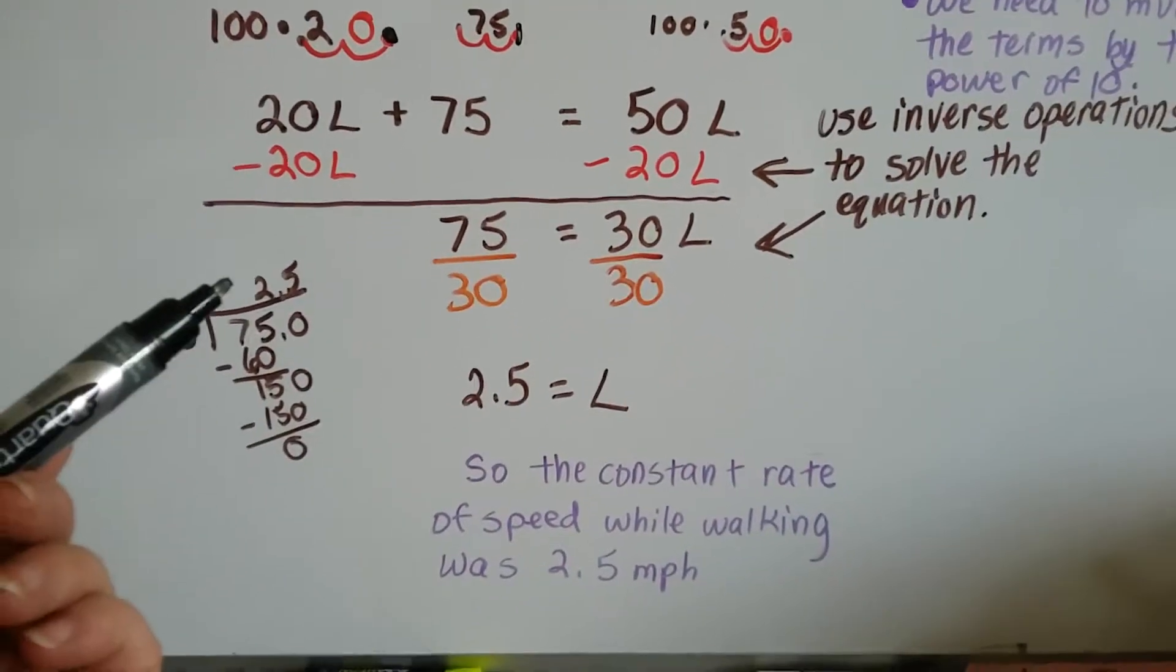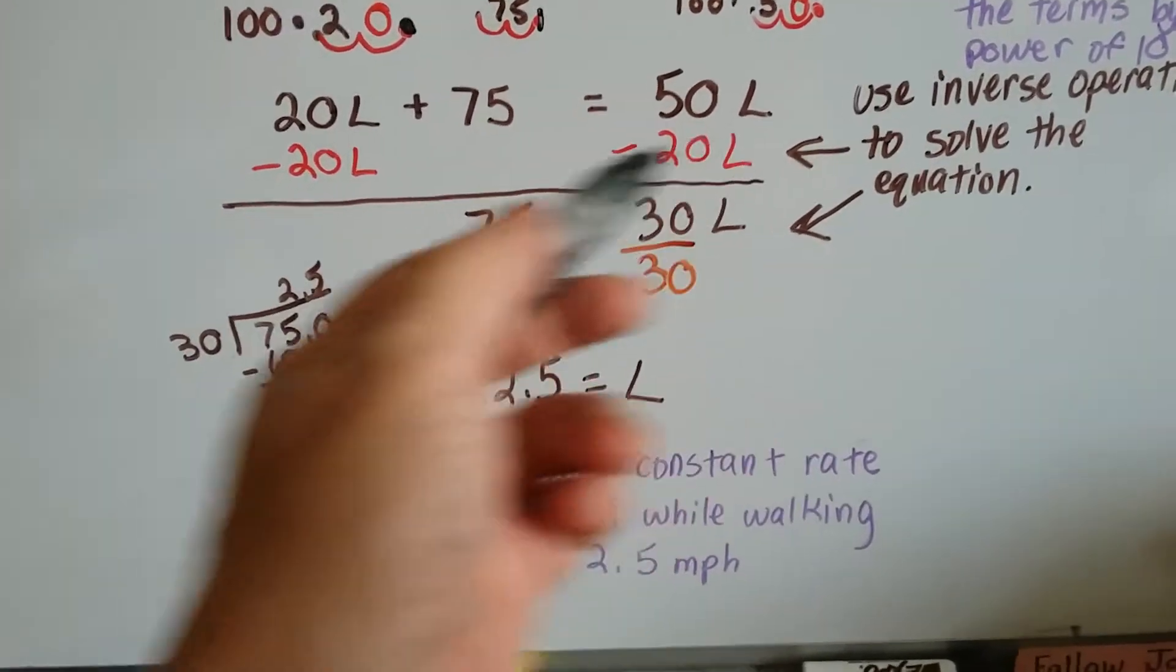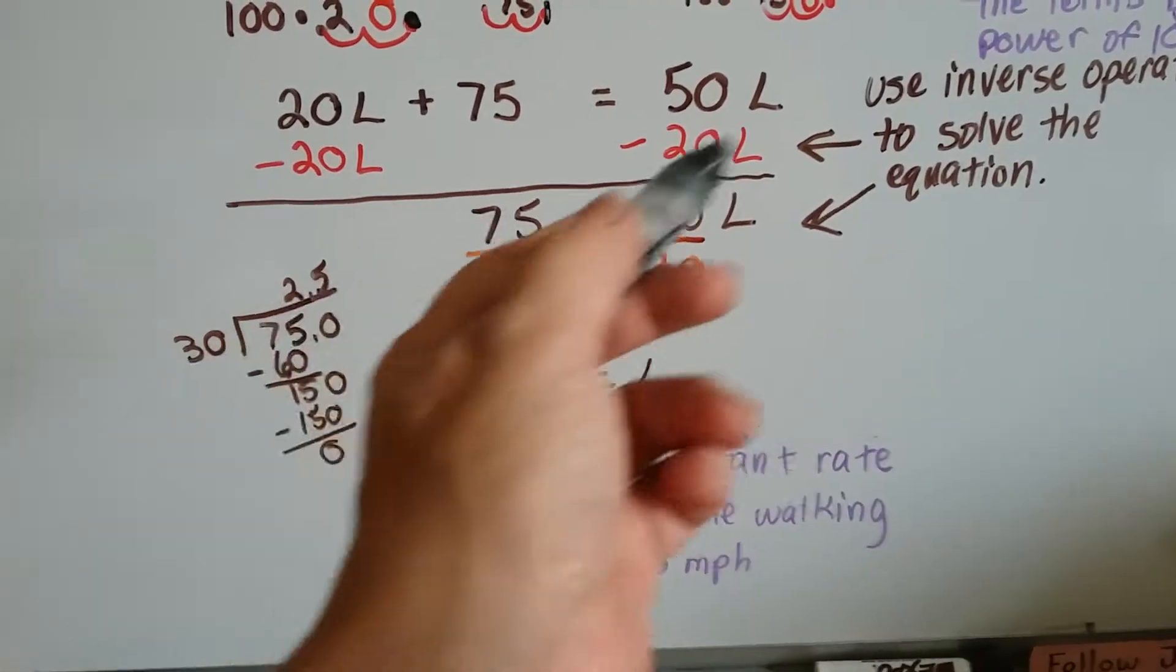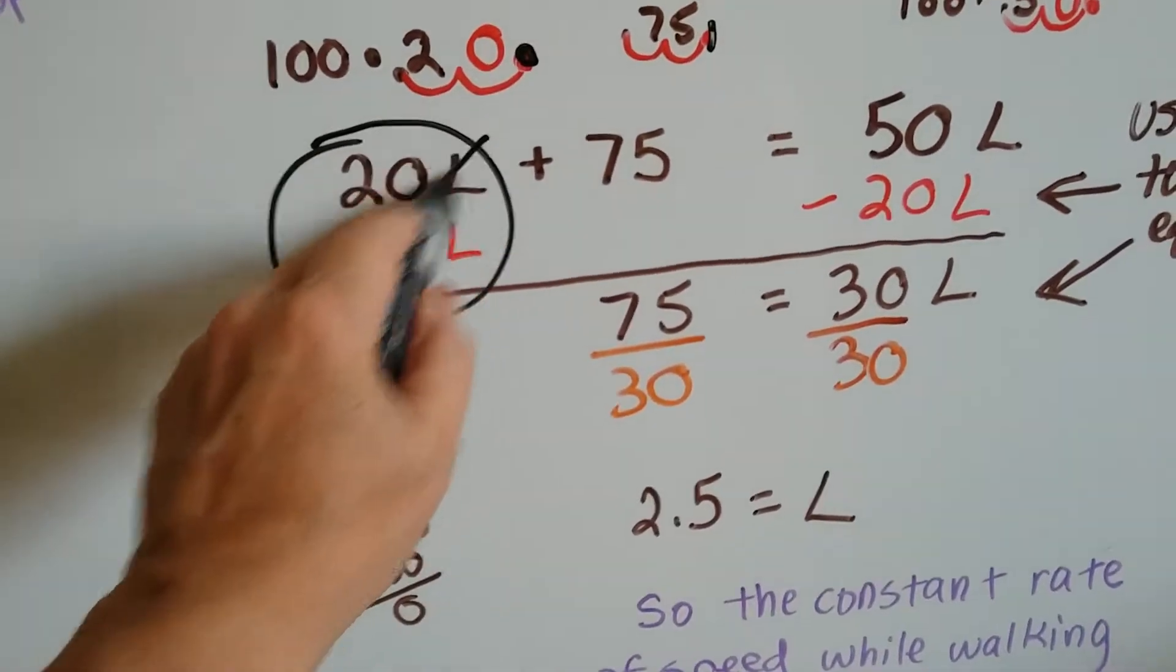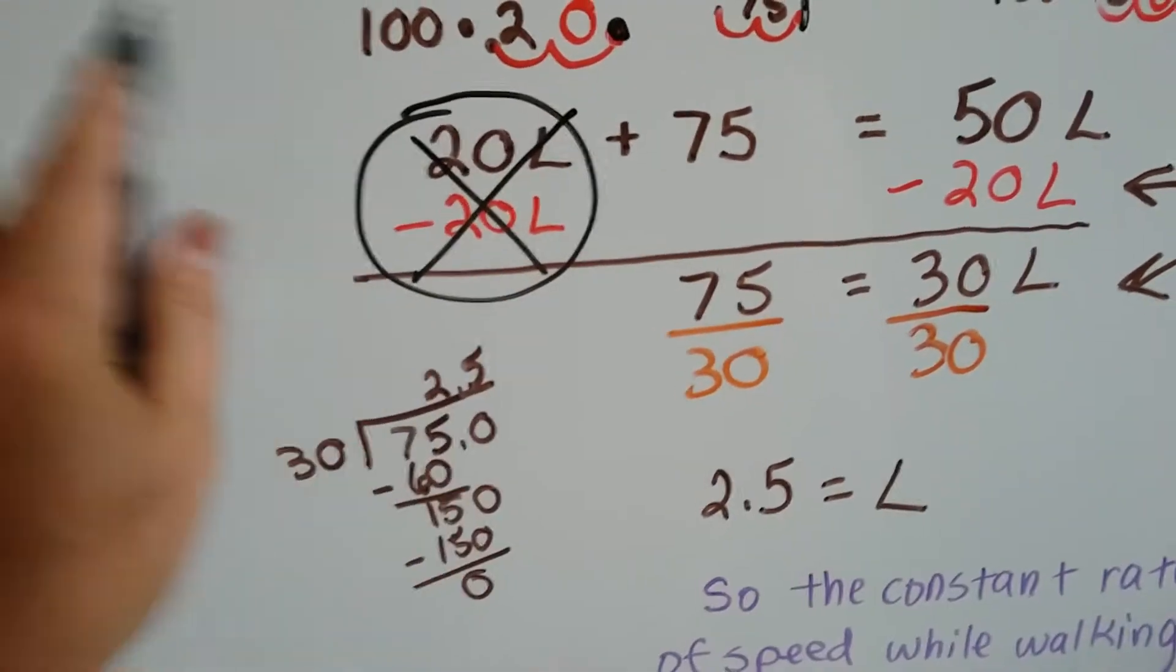Now we can use the inverse operation to solve it. We can subtract 20L from both sides, and this positive 20L and this negative 20L will create a zero pair, and it's gone.